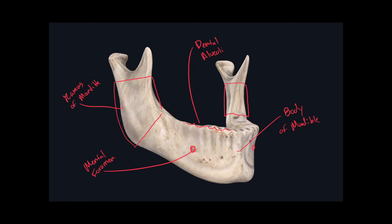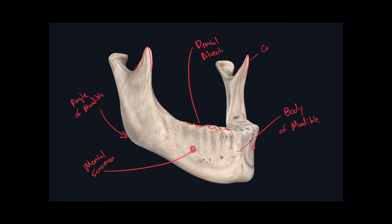Now we cover all the landmarks found on the ramus of the mandible. The first landmark is the point where the body and the ramus meet, called the angle of the mandible — you can also call it the mandibular angle. On the superior end of the ramus we have two projections: the most anterior one is called the coronoid process, and the other one is called the condyloid process. The notch between the coronoid process and the condyloid process is called the mandibular notch.